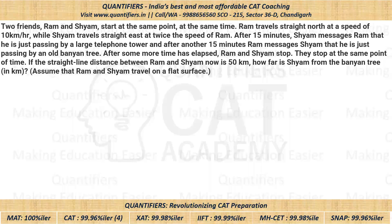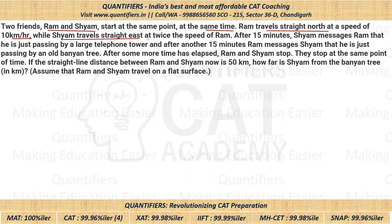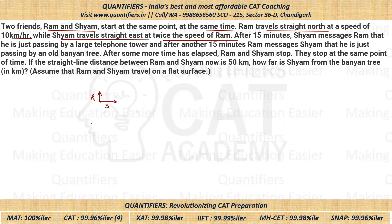So here is the question. Please pause the video and give it a try. So let's look at what is given in the question. It says two friends, Ram and Sham, start at the same point at the same time. Ram travels straight north at a speed of 10 kilometers per hour. Sham travels east at twice the speed of Ram. So the speed of Sham is double the speed of Ram.